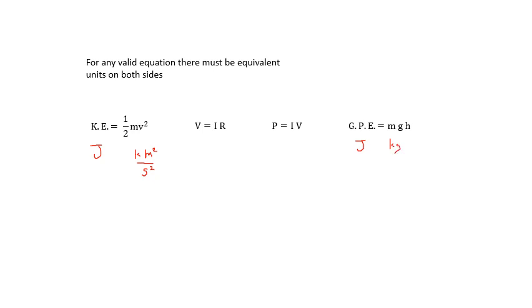Okay, g can be newtons per kilogram or it can be meters per second squared, and you'll see where I'm going with this. And h is meters, so there's the meters squared there. Any valid equation has to have the same or equivalent units on both sides.